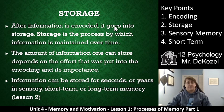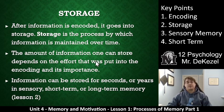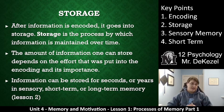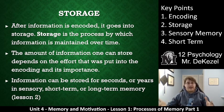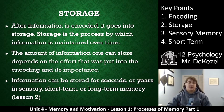After you encode it, you need key point two: storage. Storage is the process by which information is maintained in your brain over time. The amount of information you can store depends on the effort put into encoding and its importance. You can only remember as much as you noticed and were attentive to — that's how much you'll be able to remember accurately. Information can be stored for just seconds or for years, depending on the type of memory.